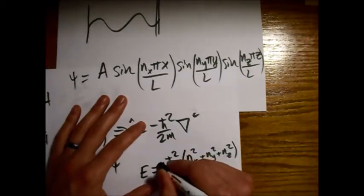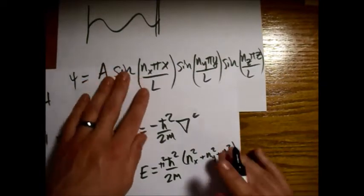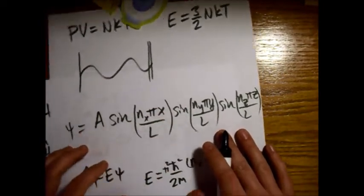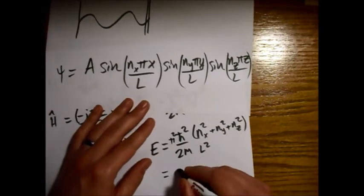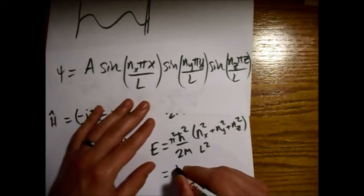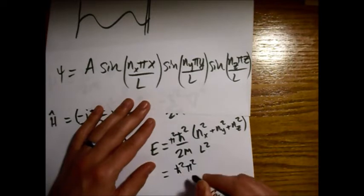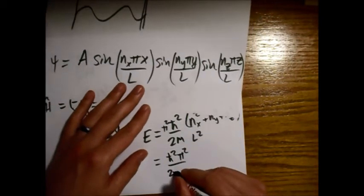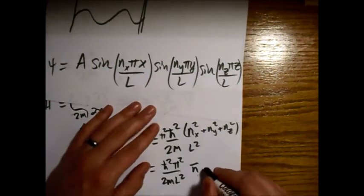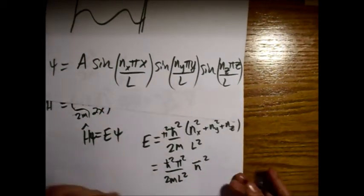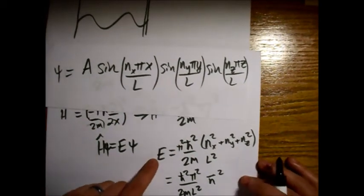Nx squared plus ny squared plus nz squared. And there's also going to be a pi squared in there from this pi that's in these terms. And an L squared on the bottom. So the way I'm going to write this is I'm just going to call this n vector squared like that. So here's our energy.